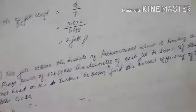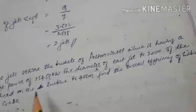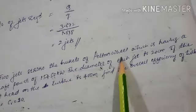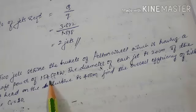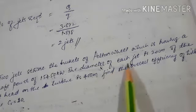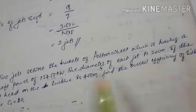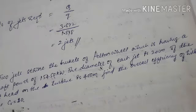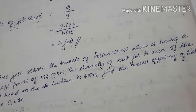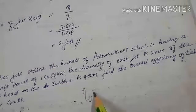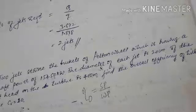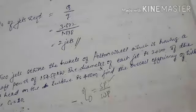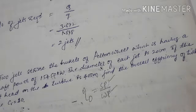Let us take one more problem. Two jets strike the buckets of a Pelton wheel having a shaft power of 15,450 kilowatt. The diameter of each jet is 20 centimeter. The net head on the turbine is 400 meter. Find the overall efficiency of the turbine. Take Cv = 1. Overall efficiency = shaft power / water power. Shaft power is given; we need to calculate water power.